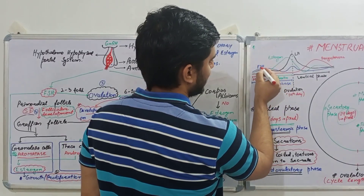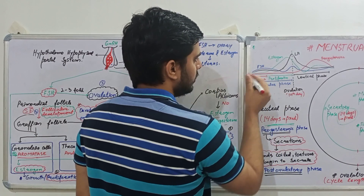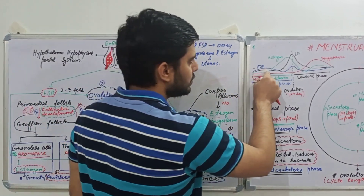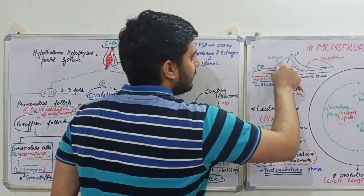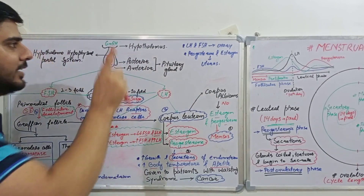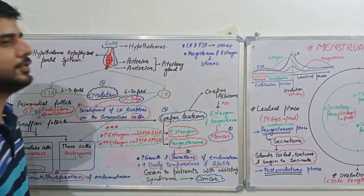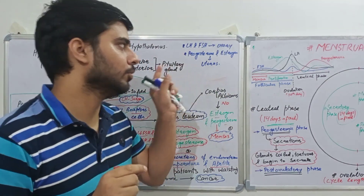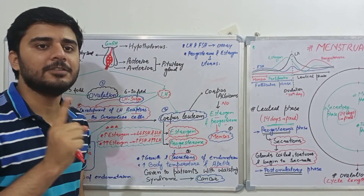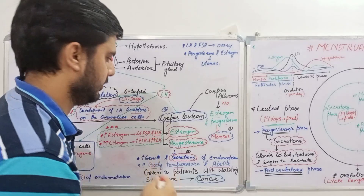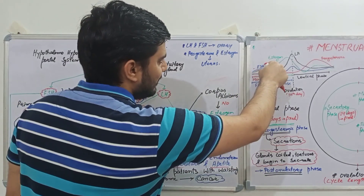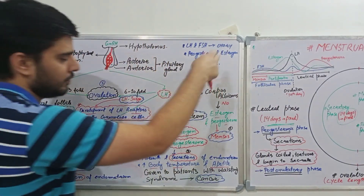Looking at the graph: first we have increased levels of FSH and LH. Then estrogen starts to be formed by the Graafian follicle, and when it does, it inhibits both FSH and LH. Importantly, estrogen inhibits FSH more than LH. The reason is that FSH drives follicle development, and we only want one follicle to develop during one menstrual cycle. To ensure only one follicle develops, estrogen inhibits FSH more in the later phase of the follicular stage.